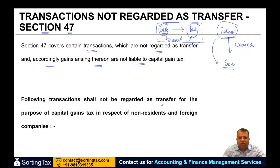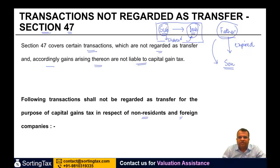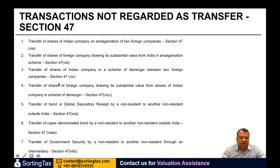The following transactions shall not be regarded as transfer for the purpose of capital gains tax in respect of non-residents and foreign companies. Section 47 has many clauses, but for the current discussion we are focusing only on those applicable to non-residents and foreign companies. The remaining cases should be studied in the normal income tax paper. Let us go through this list — it is quite a large list — and rather than going through each one together, I would prefer to go through them independently. So let us start.